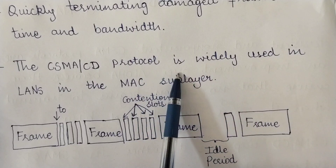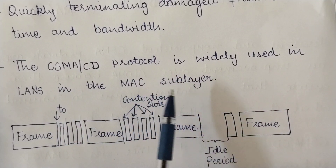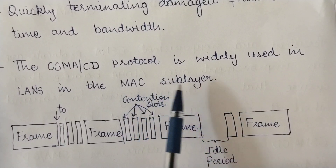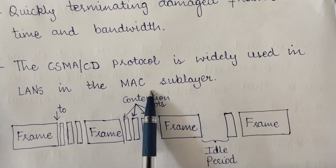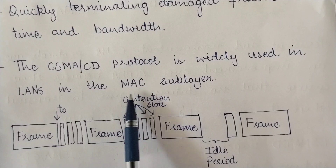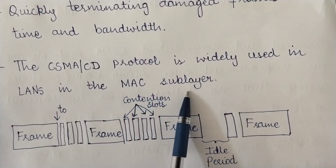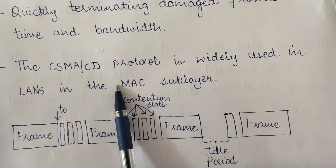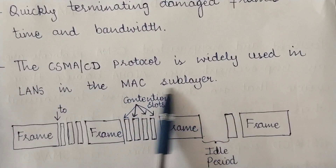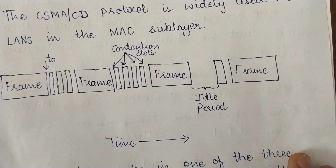The CSMA/CD protocol is widely used in LANs — local area networks — in the MAC sublayer. The MAC sublayer, or Medium Access Control sublayer, is a sublayer of the Data Link layer. The Data Link layer is divided into two sublayers: the MAC sublayer and the Logical Link Control sublayer. CSMA/CD is used in the MAC sublayer of the Data Link layer.